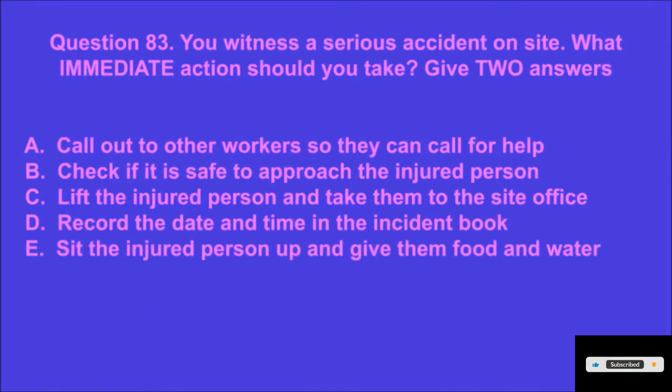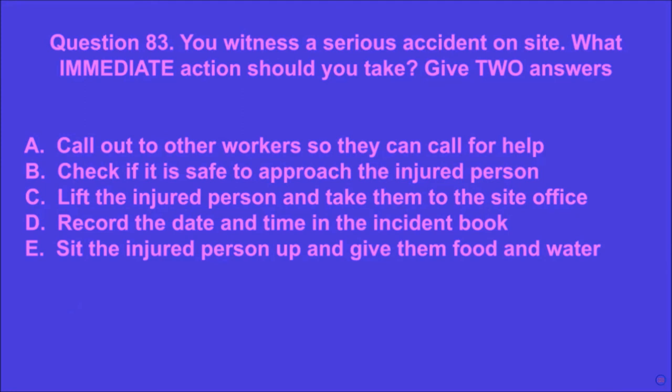Question 83: You witness a serious accident on site. What immediate action should you take? Give two answers. A: call out to other workers so they can call for help, B: check if it is safe to approach the injured person, C: lift the injured person and take them to the site office, D: record the date and time in the incident book, E: sit the injured person up and give them food and water. A and B are the correct answers.